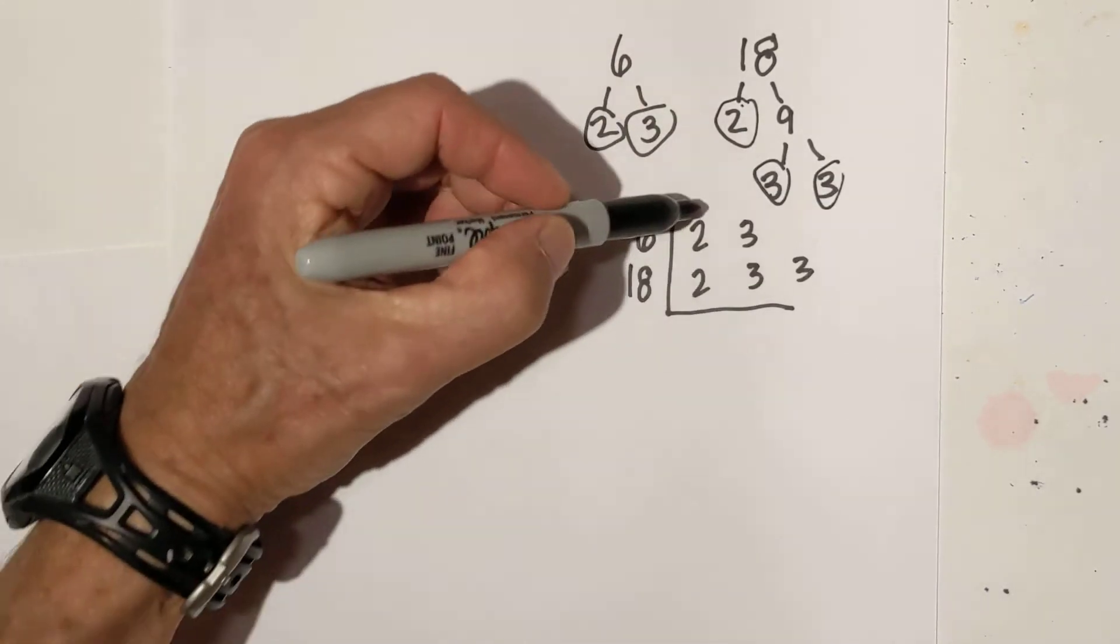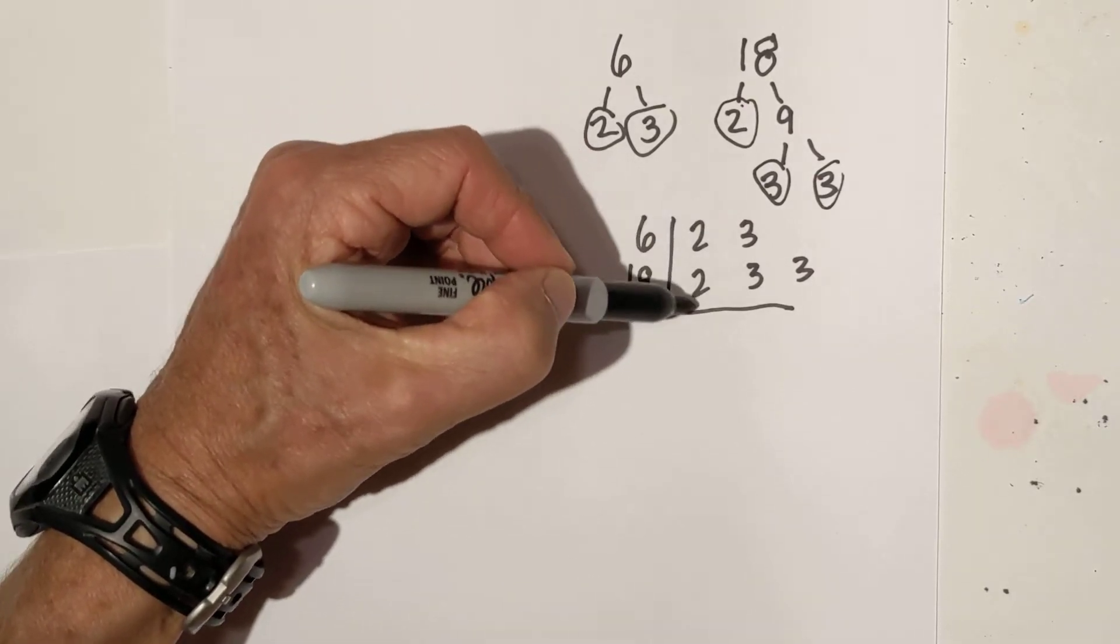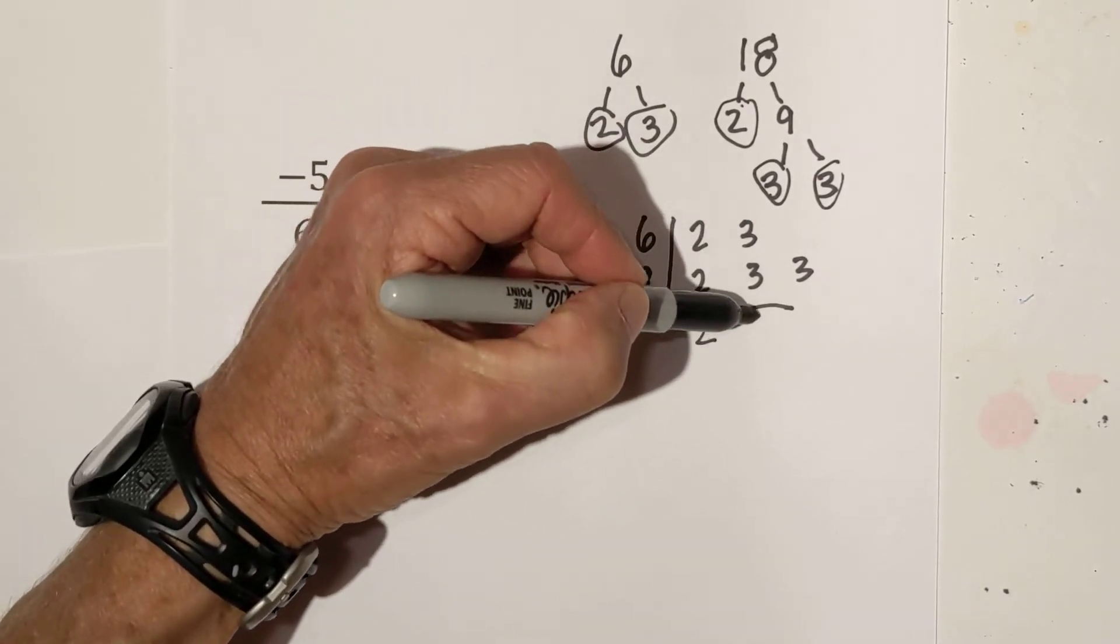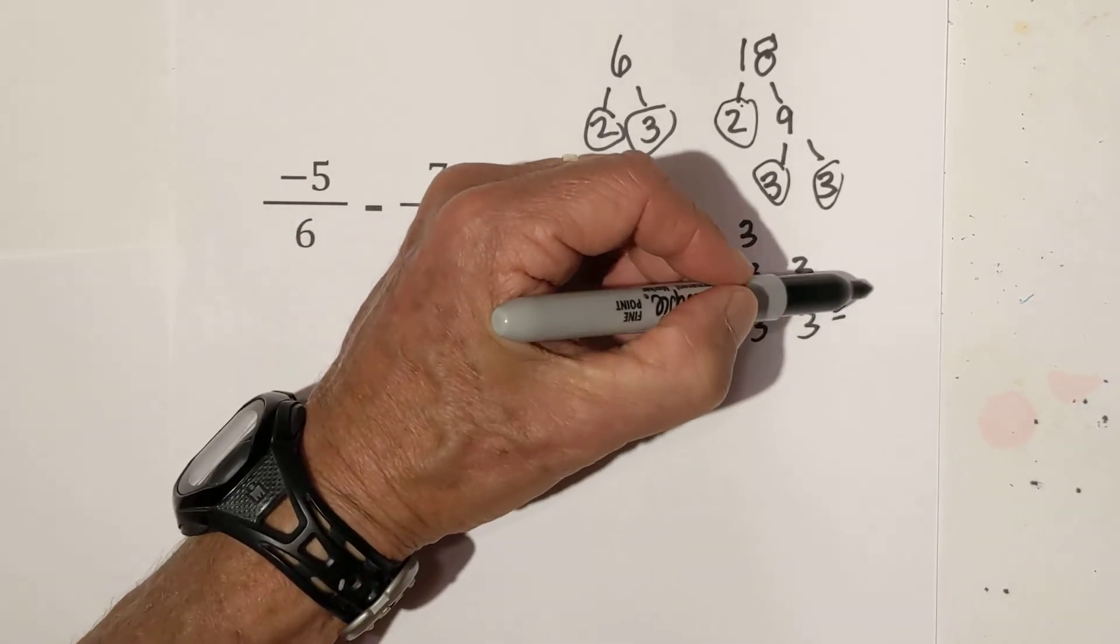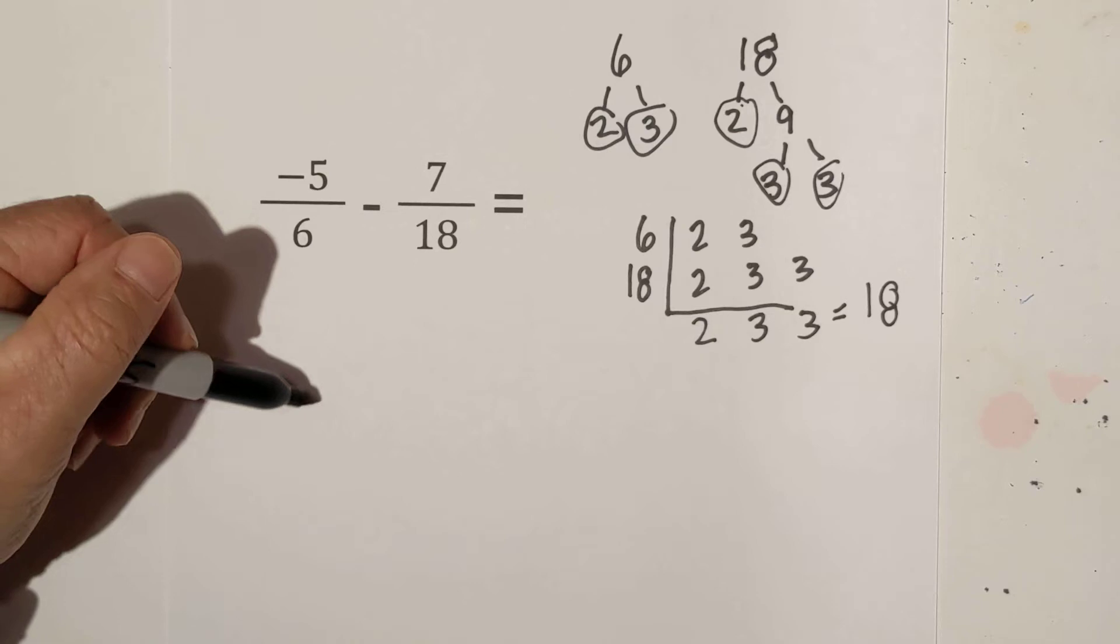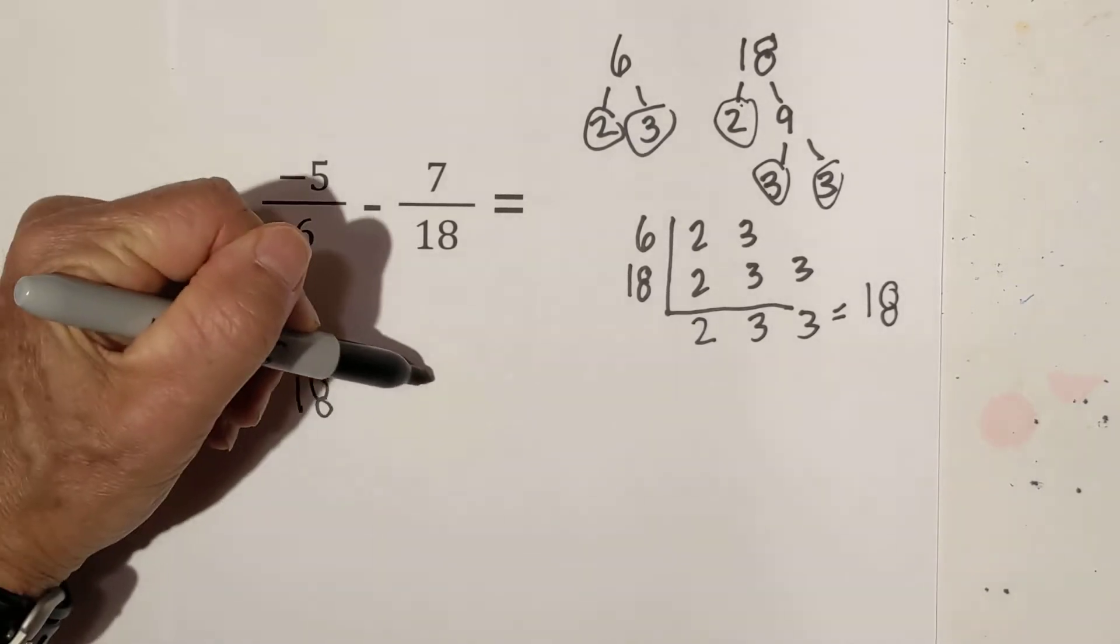Place them in the chart. Remember the rule is if you have more than one just bring down one number. And then let's multiply these together. 2 times 3 is 6, 6 times 3 is 18. So now we have the common denominator.